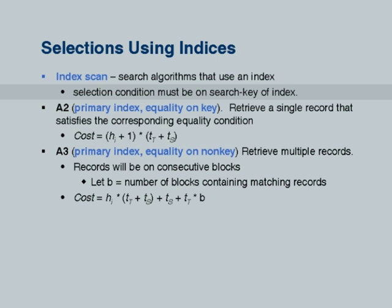The first case is a primary index with equality on a key — for example, id equal to 12121, which is one record. You take the B+ tree, start from the root, and search down. Assuming each node is not in the database buffer, you may have to perform an I/O for each level. The number of such I/Os will be H_I, and then there is a plus 1 because at the leaf level you have a pointer to the record and must fetch it too. So the cost is (H_I + 1) * (T_T + T_S).